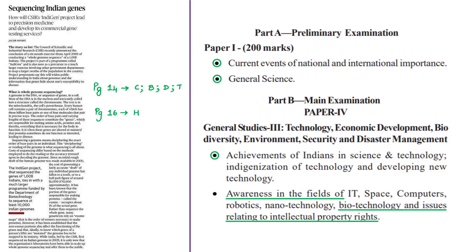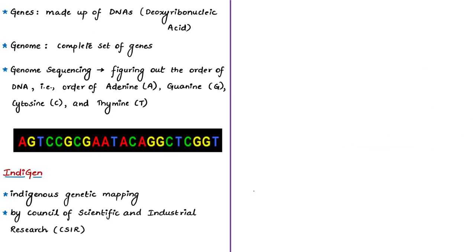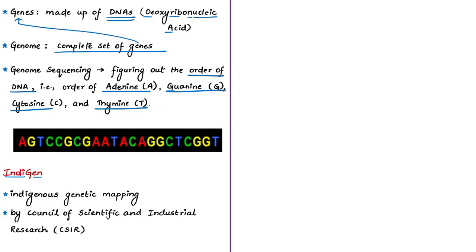The next news article from the editorial section is about sequencing Indian genes. We will discuss genome sequencing, the IndiGen project of CSIR, its significance, and CSIR in brief. When we say genome of a particular organism it refers to the complete set of genes of the organism. Genes are made up of DNA — deoxyribonucleic acid. Genome sequencing is figuring out the order of DNA nucleotides — in what order adenine, guanine, cytosine, and thymine make up the DNA of an organism.